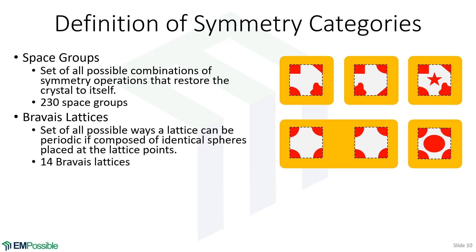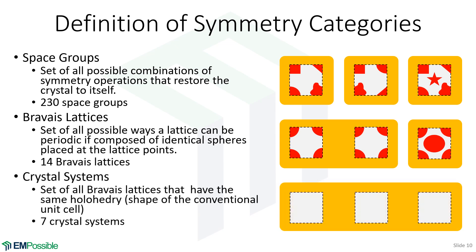Instead of looking at diamonds, squares, and stars, what if every site in the lattice was just a circle — just lattice points? Then the first two examples become the same, but the one that had a star in the middle remains distinctly different. By making that generalization, we have fewer classes. And if we look only at the outline of the unit cell, that's our crystal systems — now all three examples are classified the same way. As we get more general, the fewer ways structures can be periodic.